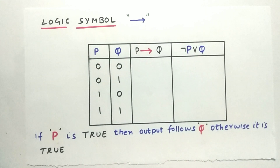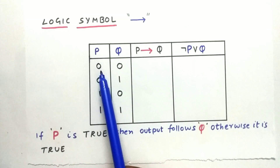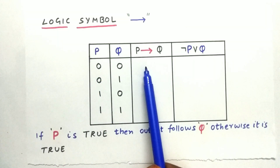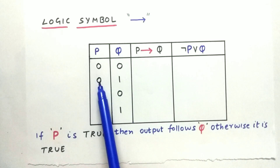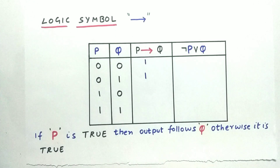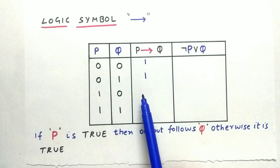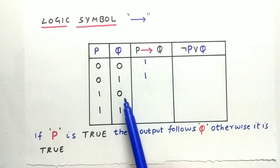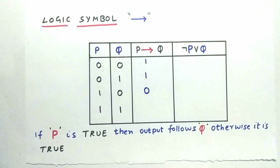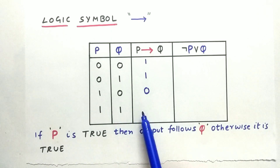From this statement we can fill our truth table. Since P is false, the output will be true. Here also, since P is false, the output will be true. Now since P is true, the output follows Q, so the output will be 0. And here also P is true, so the output follows Q, so the output will be 1.